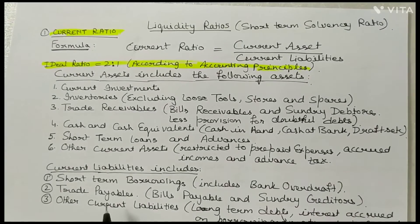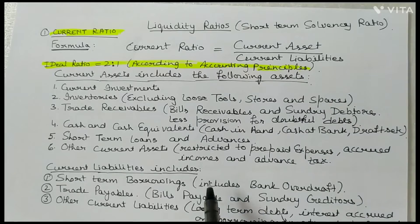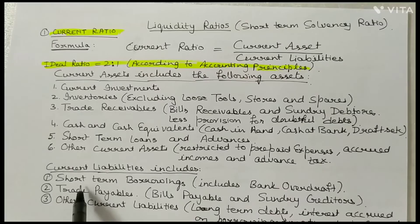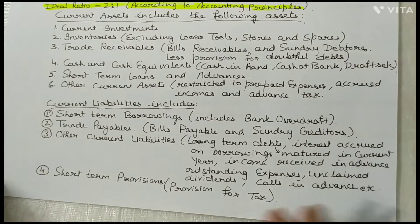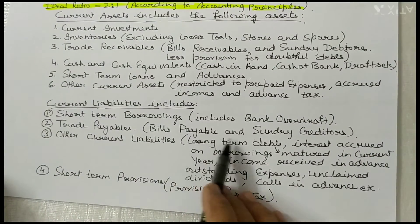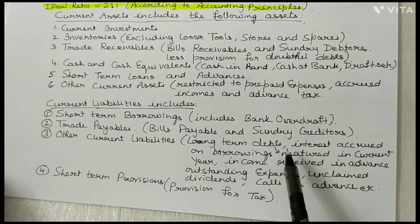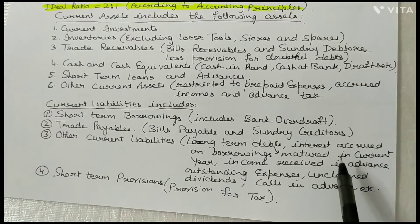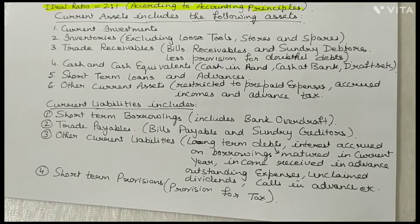Current Liabilities are those liabilities which are to be paid within a year. These include: Short Term Borrowings including Bank Overdrafts; Trade Payables, which include Bills Payable and Sundry Creditors; Other Current Liabilities such as Long Term Debt, Interest Accrued on Borrowings, Advance Received, Outstanding Expenses, Claims, Dividends, and Calls in Advance; and Short Term Provisions including Provision for Tax.